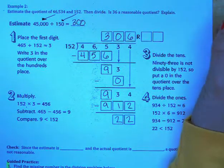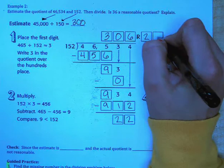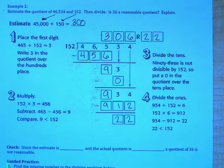22 is less than 152. So it looks like we did our problem correctly. We have a remainder of 22. Now you can check your answer using multiplication like we have been doing in the past. Just to save time on the video I'm not going to do that. But as you do your practice problems go ahead and check with multiplication to make sure you're on the right track.